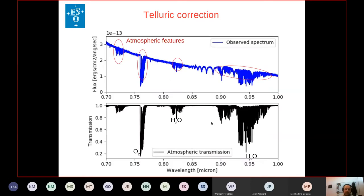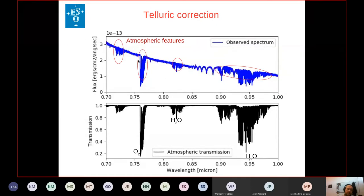The task is: you observe a spectrum like this one in blue that has some features. Those features highlighted in red are not part of the astrophysical source, but are given by the atmosphere. At the bottom I show you the atmosphere transmission — where you have a lot of absorption, you have the corresponding signature on your observed spectrum. The task is to recover the original signal of the spectrum.